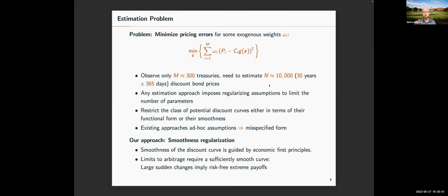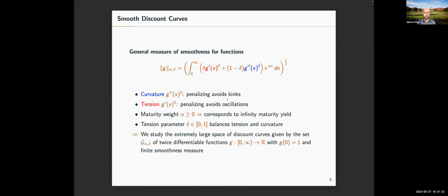We pursue a different approach: we just use the fundamental properties of this problem. The fundamental property of the discount curve is smoothness. Economic principles imply that a discount curve should be smooth — if we observe jumps in a discount curve, say between a bond maturing at time t and another at time t+1 with very different prices, we could construct a risk-free strategy with extreme payoffs. Limits to arbitrage imply that a certain degree of smoothness is required to avoid these situations.